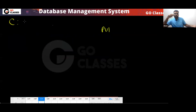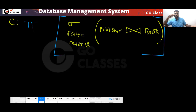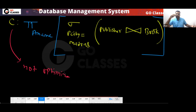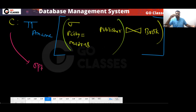For Option C, you join the Publisher table with the Book table, then select where city equals 'Madras', and then project the author name. However, this is not optimized. To optimize it, apply early use of selection — push the selection on city = 'Madras' to the Publisher table before performing the join. Now the query is optimized.